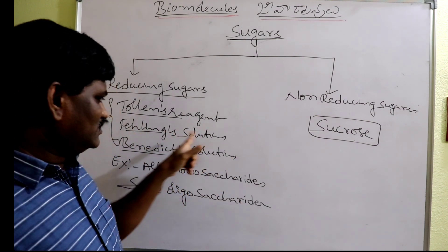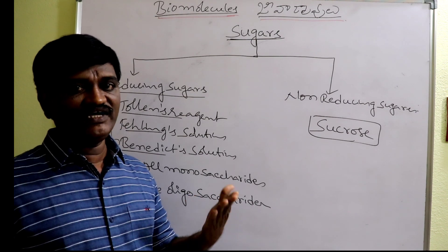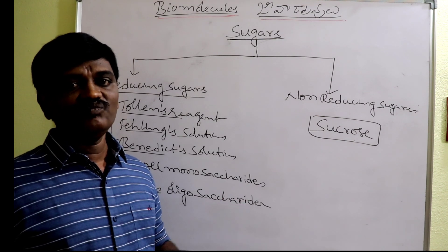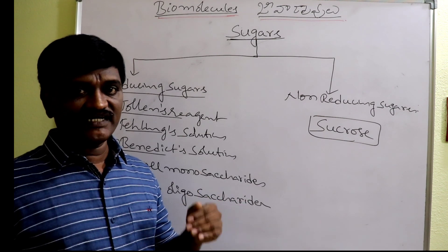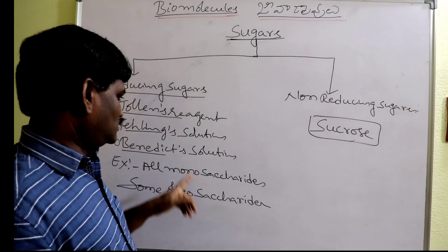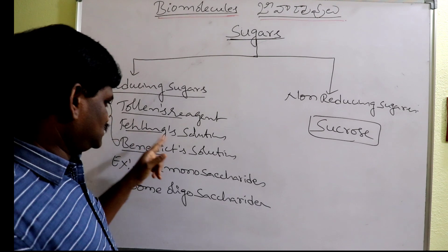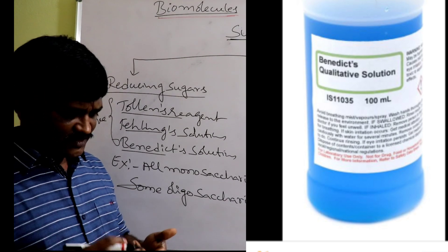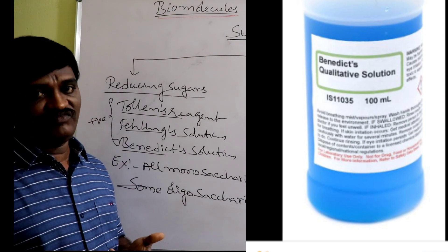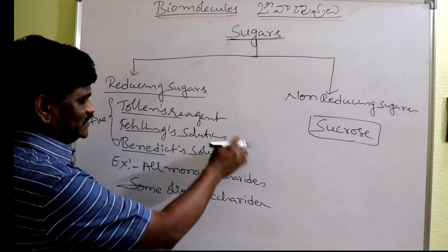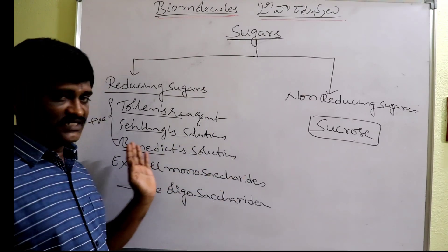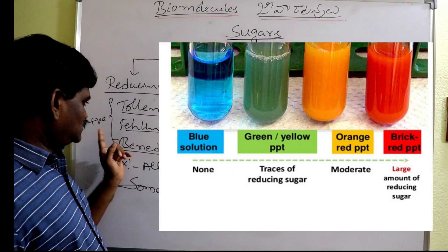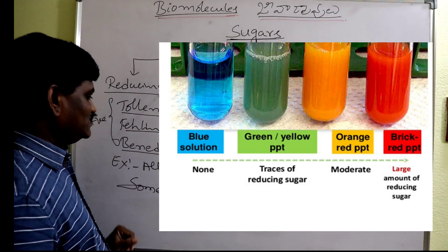Fehling solution consists of Fehling A — copper(II) sulfate solution, which is blue in color — and Fehling B, which is sodium potassium tartrate (Rochelle salt). Benedict solution is a mixture of sodium carbonate, sodium citrate, and copper(II) sulfate. These two tests are similar. A red precipitate forms because cupric ions (Cu²⁺) are reduced to cuprous ions (Cu⁺).